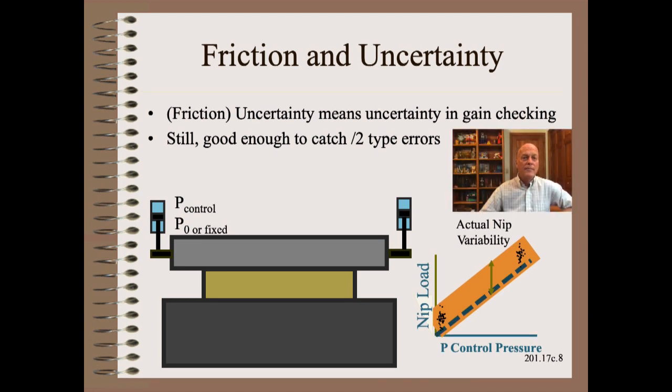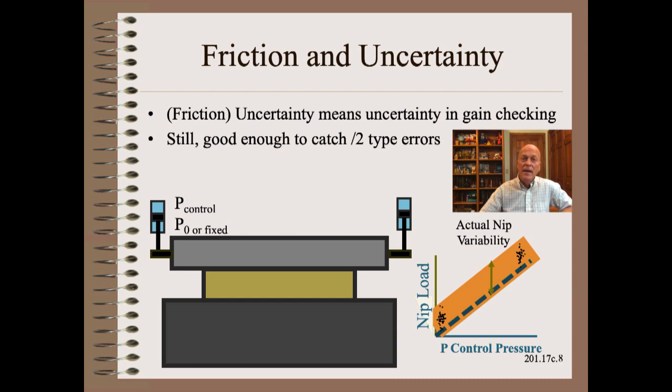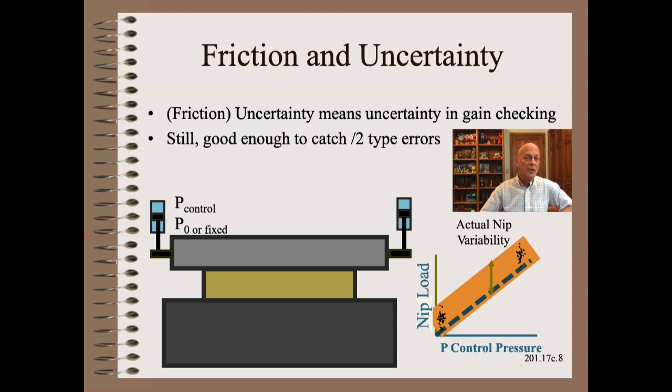However, as we should come to expect, friction complicates everything. It is the direct and proximate cause of uncertainty in actual real nip loads, even given a perfectly controlled cylinder control pressure. Thus, repeated measurements are needed and there will be a bunch or a bit of scatter in our reading. Still, this is more than good enough to catch divide by two type errors.